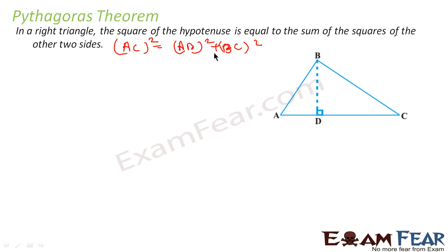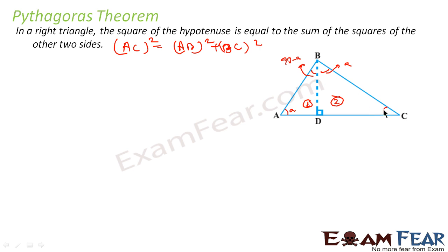To prove this, what we can do is find AB squared, BC squared, and AC squared. We can take two triangles — ABD and ABC — to get AB squared. Let's suppose ABD is triangle 1 and BDC is triangle 2, and the whole triangle is ABC. This angle is equal to A, this becomes 90 minus A, this is also 90, and this becomes A. So 90 minus A plus 90 gives A. Since this becomes A, this also becomes 90 minus A. BD is perpendicular to AC, which is the hypotenuse.